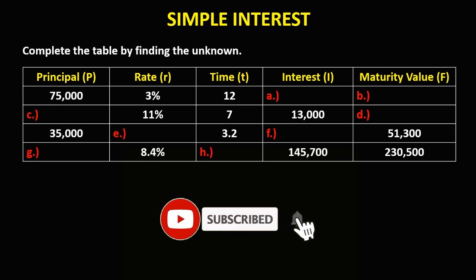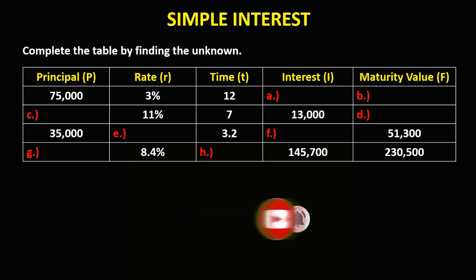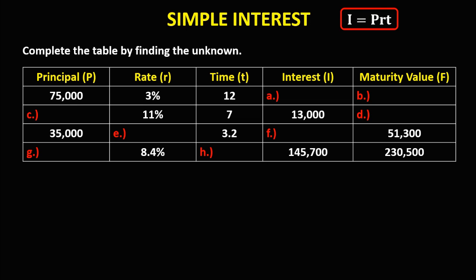So let's have this topic: simple interest. We have this problem, so complete the table by finding the unknown. The formula for simple interest is principal times rate times time, and for the maturity value, that's the principal plus the interest.